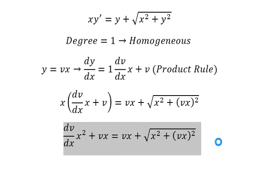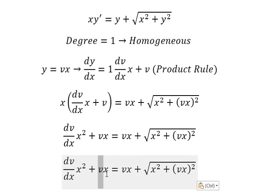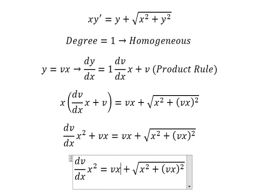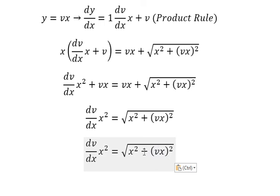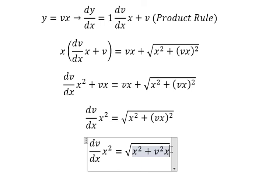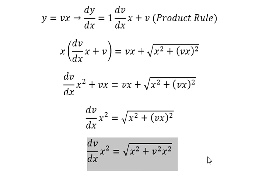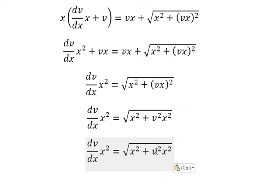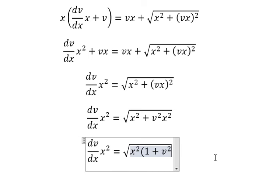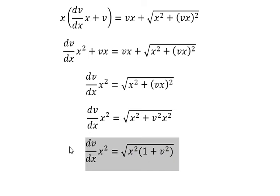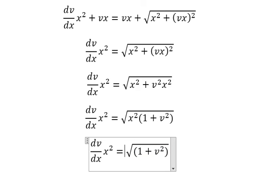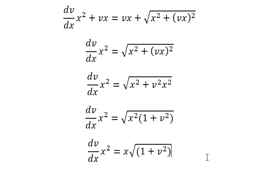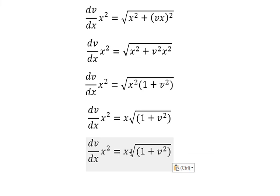Next, we simplify v for both sides. This one is about v squared times x squared. Next, x squared — we can do factorization. The square root of x squared gives us x.